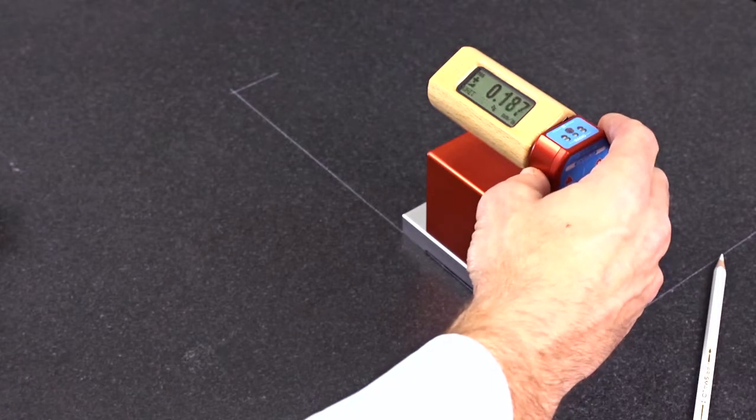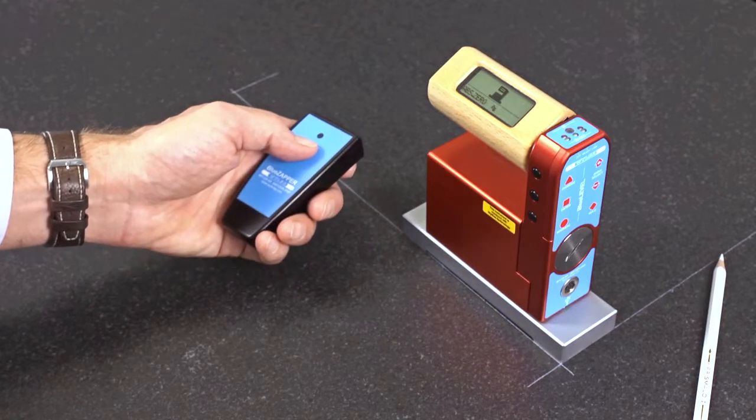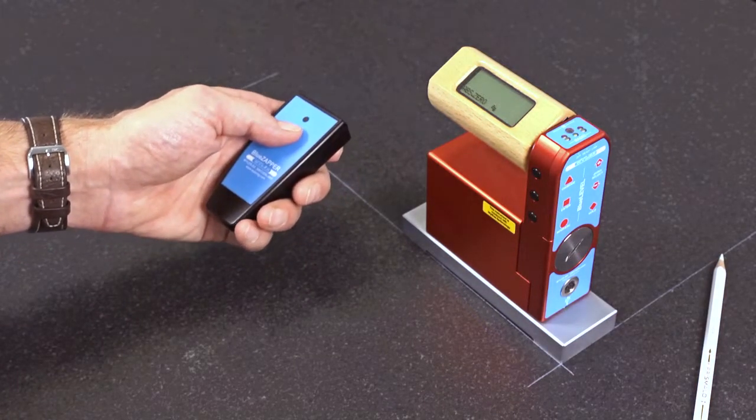In the menu I'm selecting the item absolute zero and I'm confirming it with the Enter key. With the Zappel I can now trigger the first measuring value contact-free.